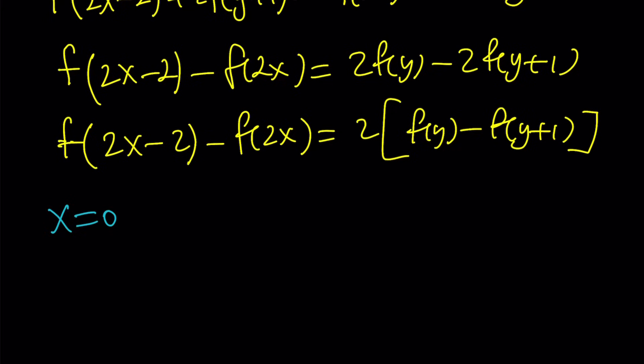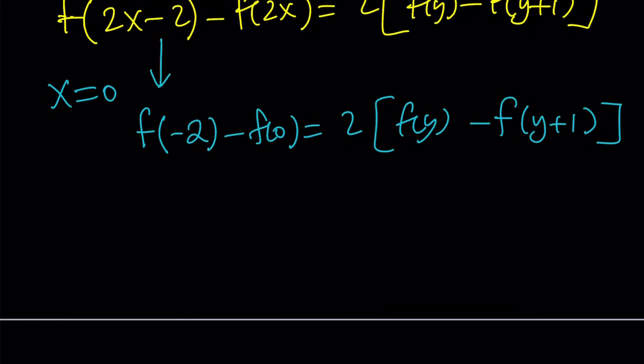When you replace x with 0, I get f(-2) - f(0) = 2[f(y) - f(y+1)]. I told you this difference is going to be significant. Let's isolate it by dividing both sides by 2 and switching sides.